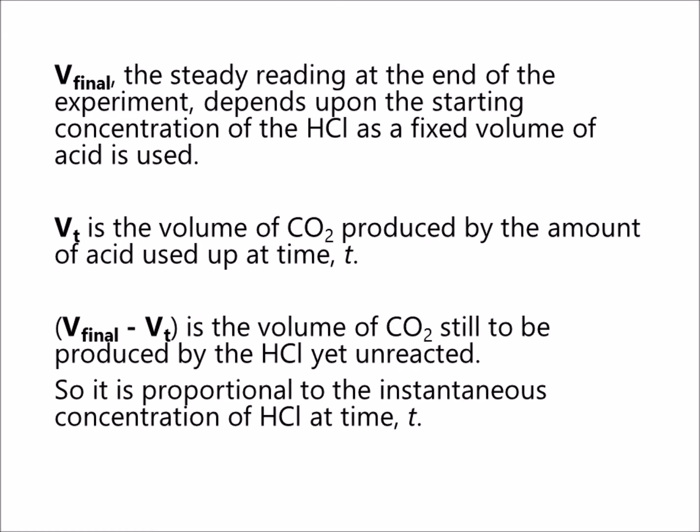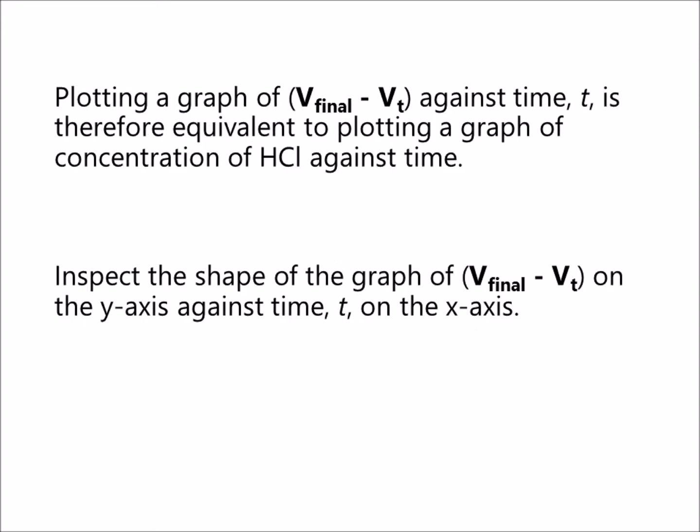V-final, the steady reading at the end of the experiment, depends upon the starting concentration of the HCl as a fixed volume of acid is used. V-final minus Vt is the volume of carbon dioxide still to be produced by the HCl yet unreacted, so it is proportional to the instantaneous concentration of HCl at time t. Plotting a graph of V-final minus Vt against time t is therefore equivalent to plotting a graph of concentration of HCl against time.